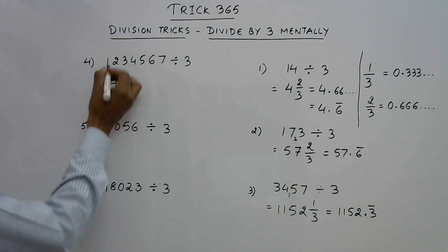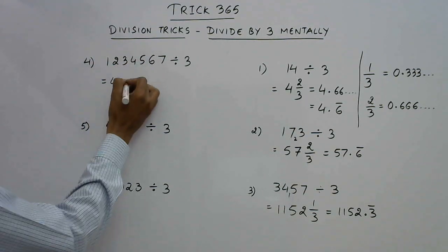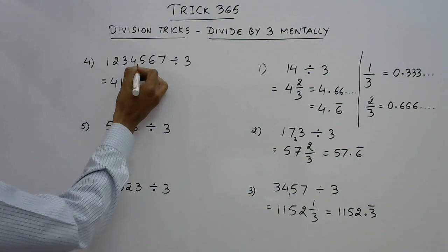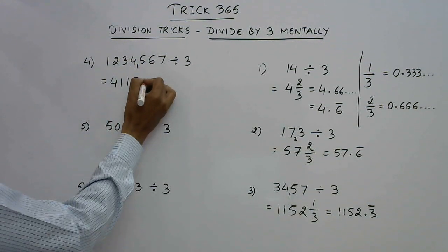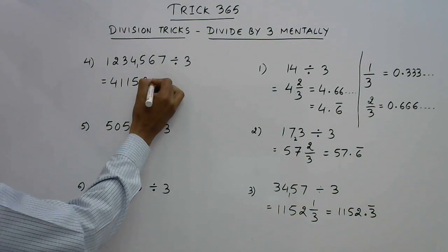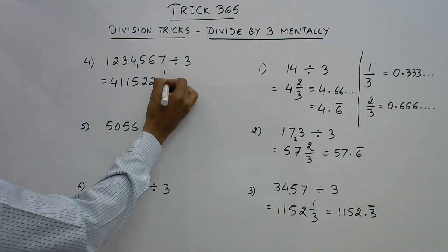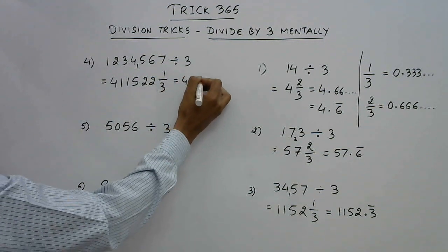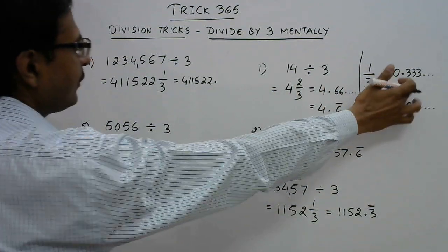Let's have some more examples. Three fours are twelve — three ones are three — three ones are three, so we have a remainder of one. Then fifteen — three fives are fifteen — three twos are six, three twos are six, so we have a remainder of one. So again the digits before the decimal are formed the same way, and after the decimal we have a three repeating itself — 3̄.